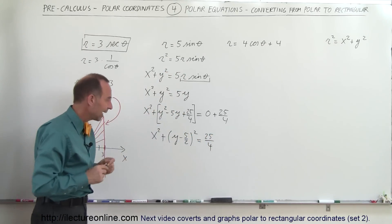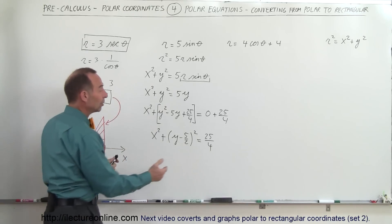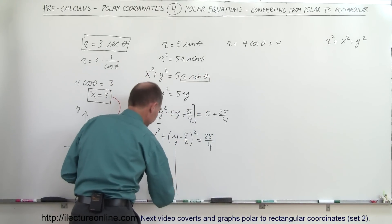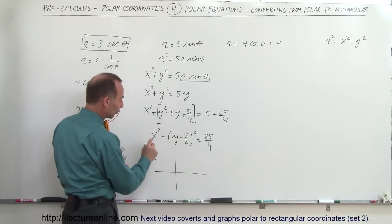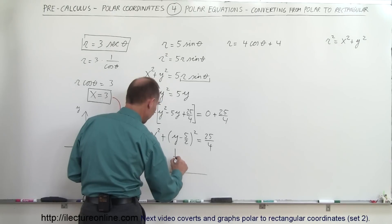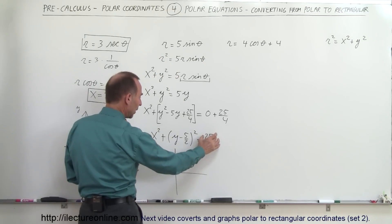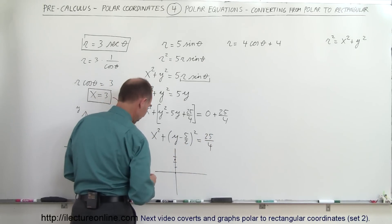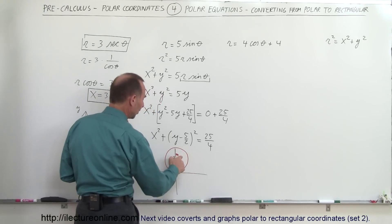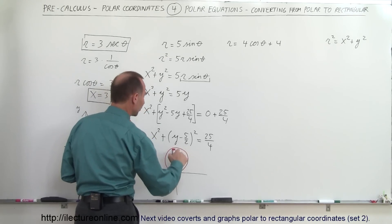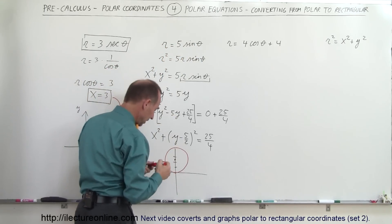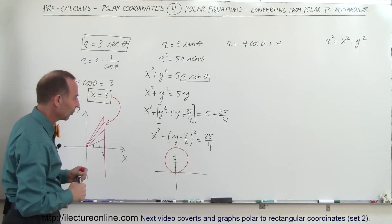This looks like a circle that has been offset. The radius is the square root of 25 over 4, which is 5 divided by 2. If we graph this, the center of the circle is at x equals 0, y equals 5 halves — so at 0, 2.5 on the y-axis — and the radius is 2 and a half. So r equals 5 sine of theta is a circle with center at x equals 0, y equals 5 over 2.